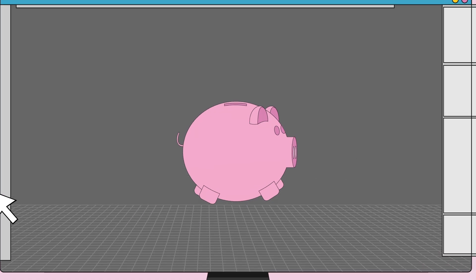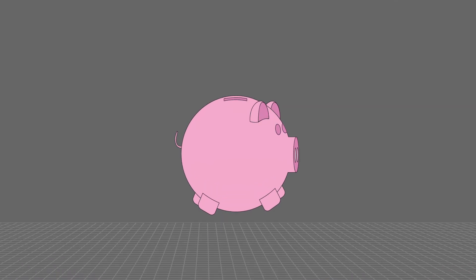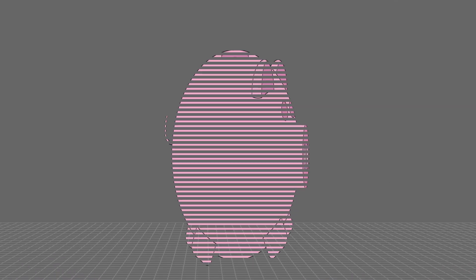Step two. The digital model is broken down into hundreds or even thousands of thin horizontal layers with a process called slicing.